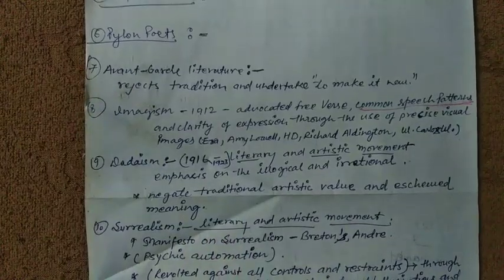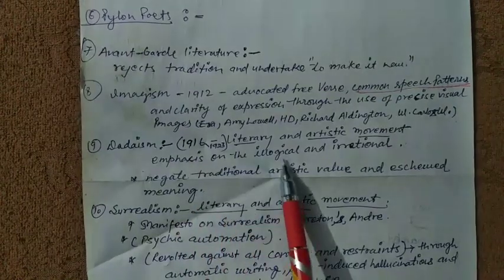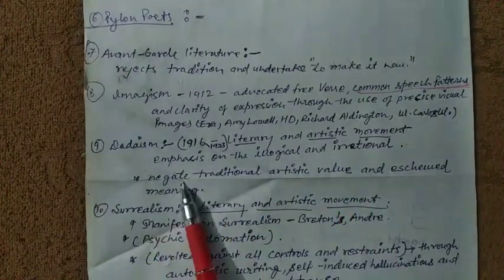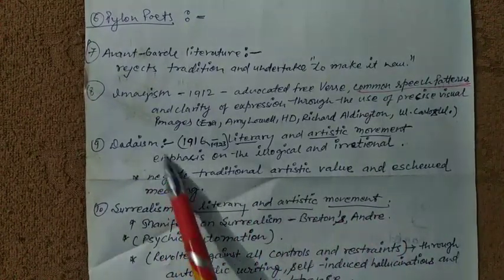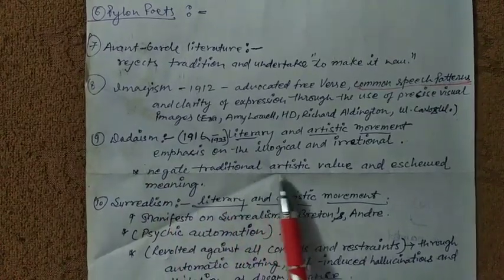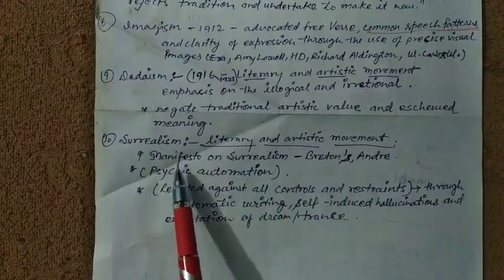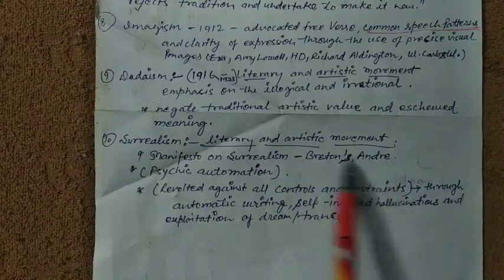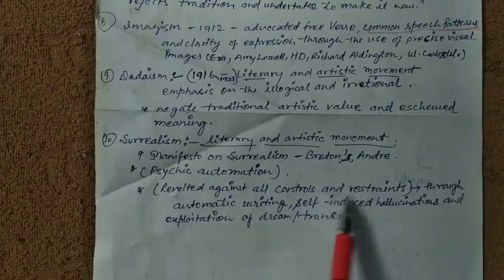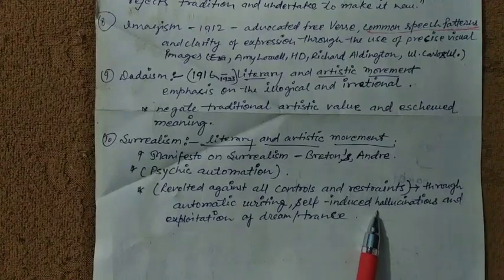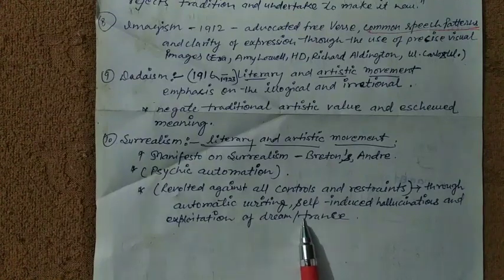Dadaism is a literary and artistic movement that emphasizes the illogical and irrational, and negates traditional artistic values and established meaning. Surrealism was a literary and artistic movement; the Manifesto on Surrealism was written by Breton and Ray. It focused on psychic automatism — a revolt against all control and restraint through automatic writing, self-induced hallucination, and the exploitation of dream or trance states.